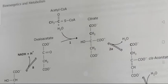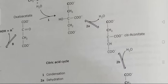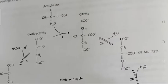The citric acid cycle begins with the condensation of oxaloacetate, a four-carbon unit, and the acetyl group of acetyl coenzyme A, a two-carbon unit. Oxaloacetate reacts with acetyl coenzyme A and water to yield citrate. This reaction is an aldol condensation followed by hydrolysis, and it is catalyzed by the enzyme citrate synthase.